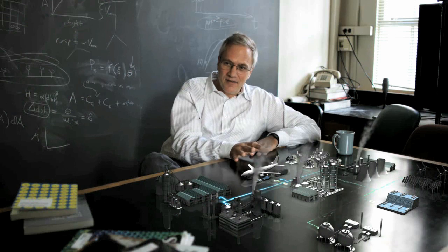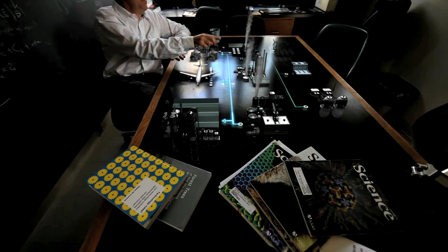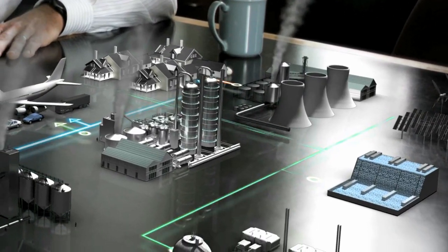What CCS does is it allows you to keep the energy flowing, but keep the CO2 that used to rise into the atmosphere, and you put it into the ground instead.